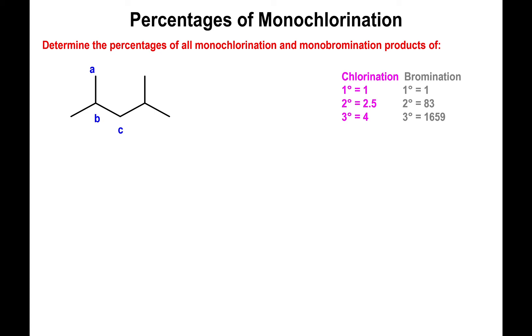So we only have three potential products that we're going to generate. We're going to do this for chlorination and for bromination, and we have to keep in mind the relative rates we just calculated: 1 for primary, 2.5 for secondary, and 4 for tertiary in the case of chlorination; 1, 83, and 16.59 in the case of bromination.